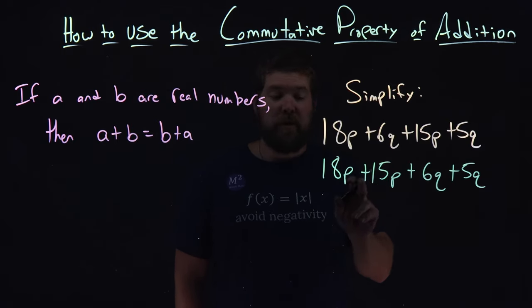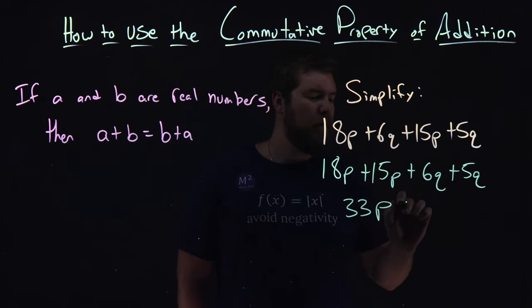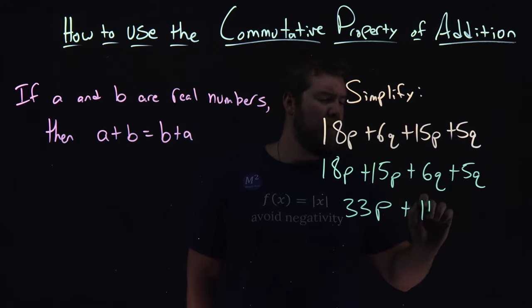18 plus 15, we look at the coefficient there, and that is 33p. Plus 6q and 5q, again the coefficients, 6 and 5 being 11. We have 11q.